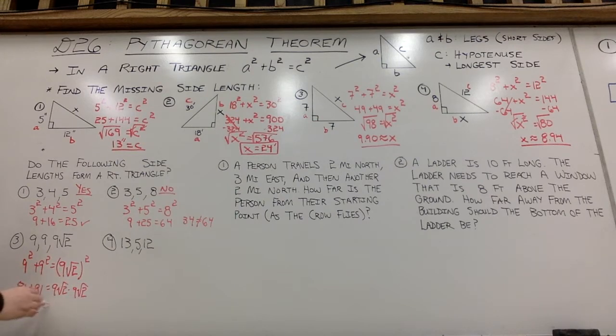9 square root of 2 times 9 square root of 2. So I'll multiply my outside terms, 9 times 9, 81. And then my inside terms, square root of 2, square root of 2 is square root of 4. Well, the square root of 4 is just 2. 81 times 2 is 162.